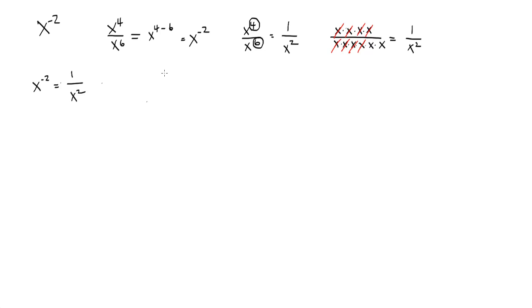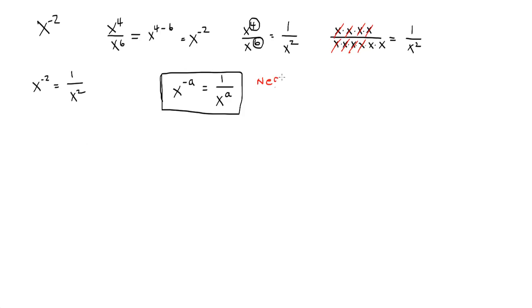We can write that as an algebra rule: x to the negative a equals 1 over x to the a. Negative exponents are the reciprocal of positive exponents.